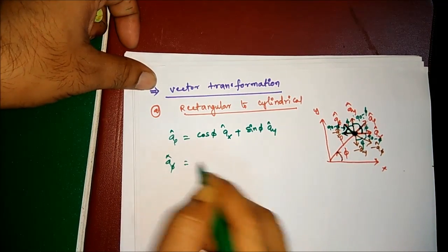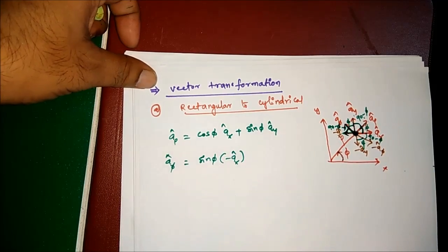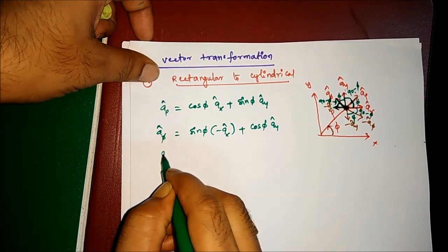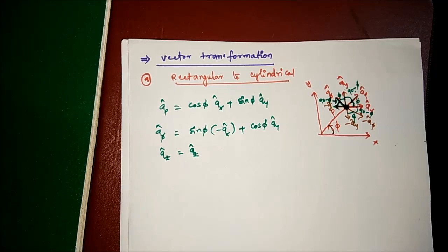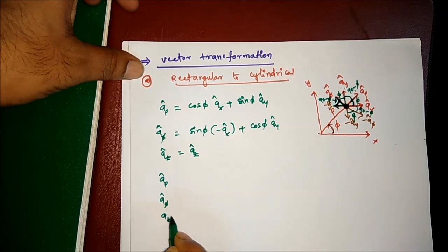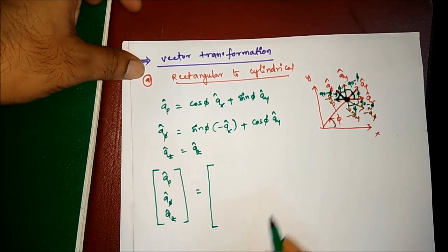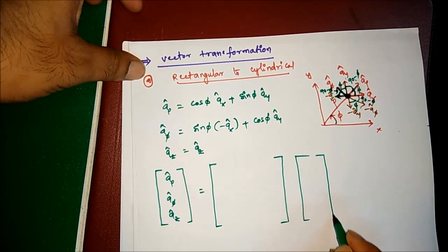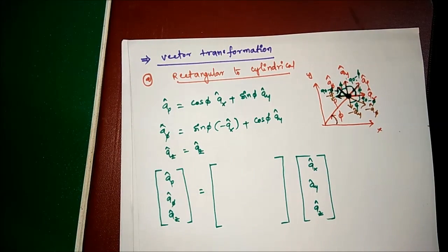a_φ can be resolved as: the angle to a_x is 90 minus φ giving sin φ, but the direction is negative a_x, so a_φ = −sin φ · a_x + cos φ · a_y. And a_z is the same as a_z. Now putting these three equations into matrix form with a_ρ, a_φ, a_z on the left and a_x, a_y, a_z on the right.